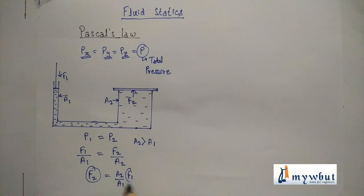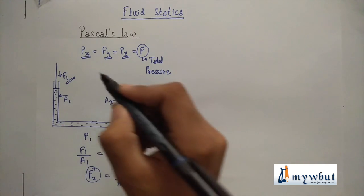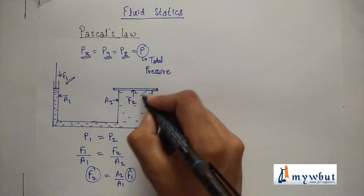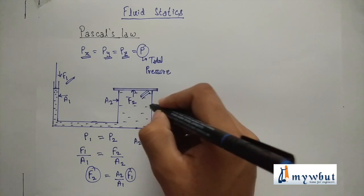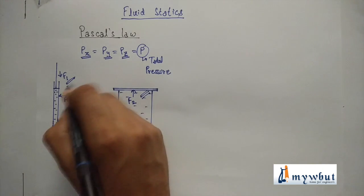Now since the area A2 is greater than A1, the lifting force will always be greater than the applied force. Hence with a small amount of pushing force we will get a huge amount of lifting force, so heavy objects like cars can be lifted easily with small amount of force.